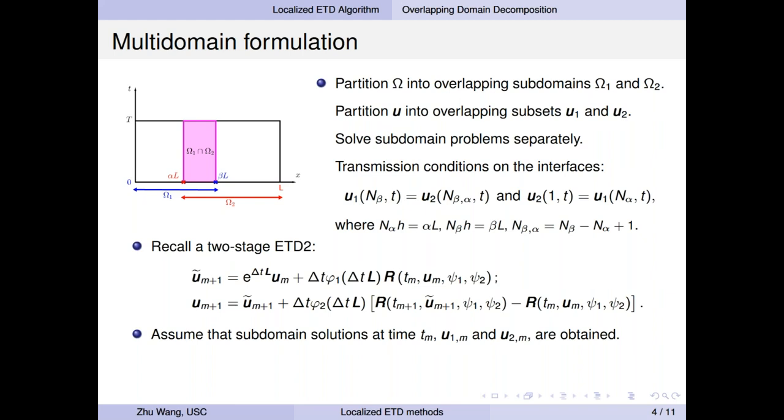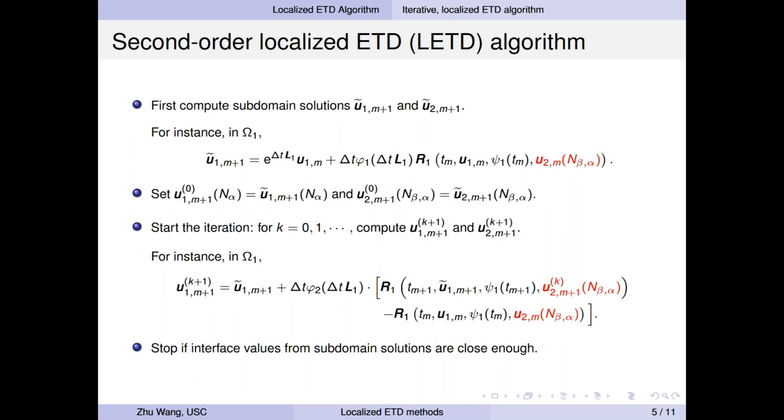So our algorithm is motivated by two-stage ETD2. So just recall, the first stage is first-order approximation, kind of prediction. Second stage is just a correction. Then assume the subdomain solutions at the current time step are known.